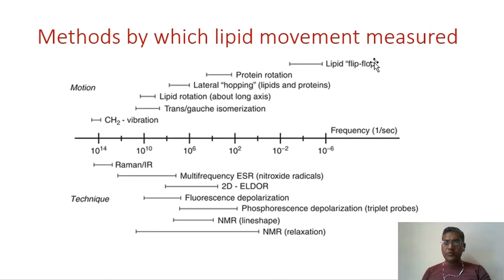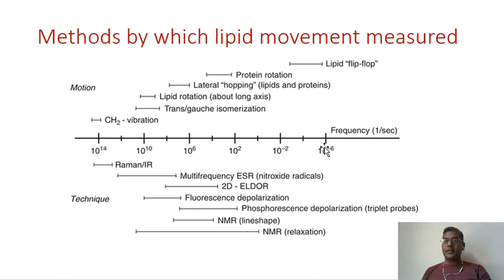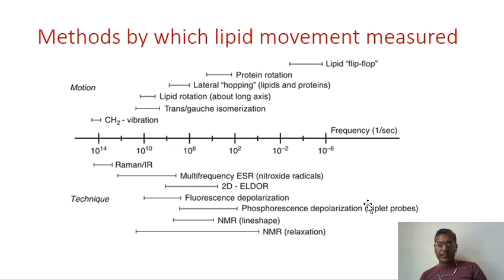Flip-flop is so fast — happening at 10 to the power of minus 6 or minus 5 of a second. To measure that, there are methods such as time-resolved fluorescence spectroscopy, where you label a molecule and measure it at the nano or even pico level of a second.